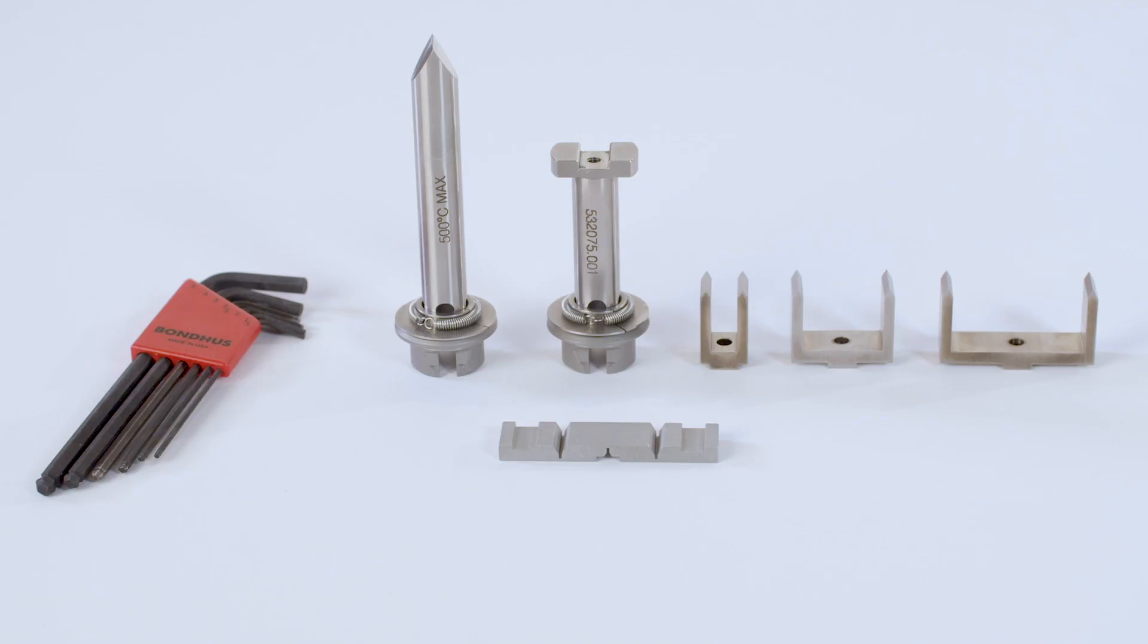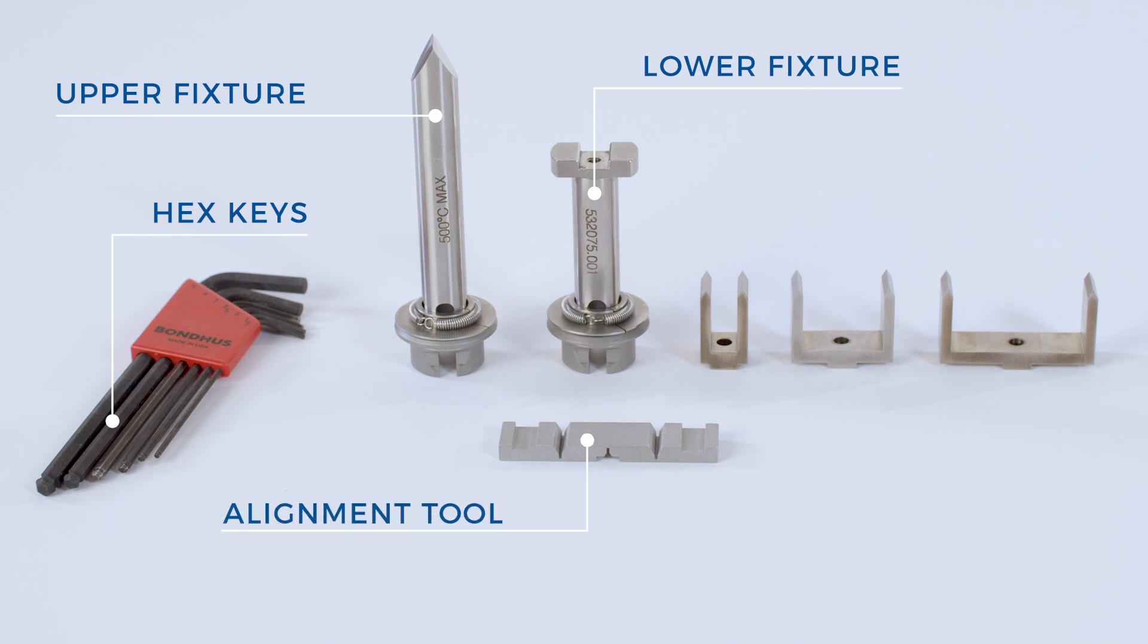The three-point bending clamp kit includes a set of hex keys, the upper and lower fixtures, one alignment tool, and 10, 25, and 40 millimeter size frames.